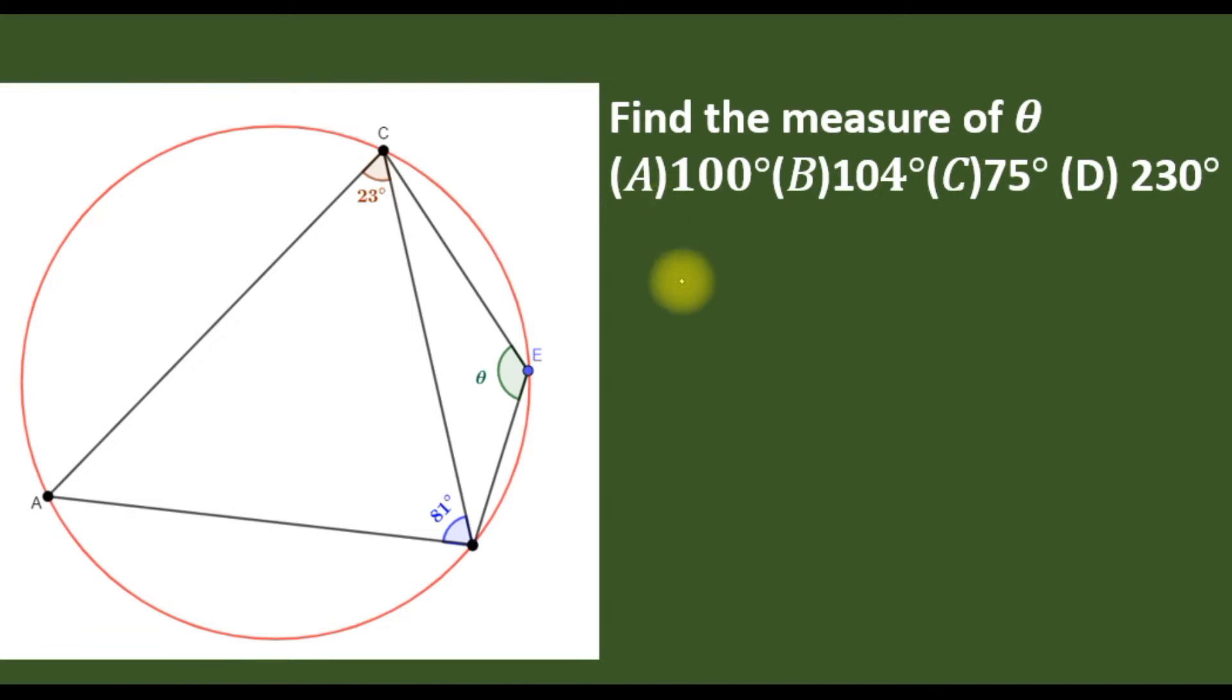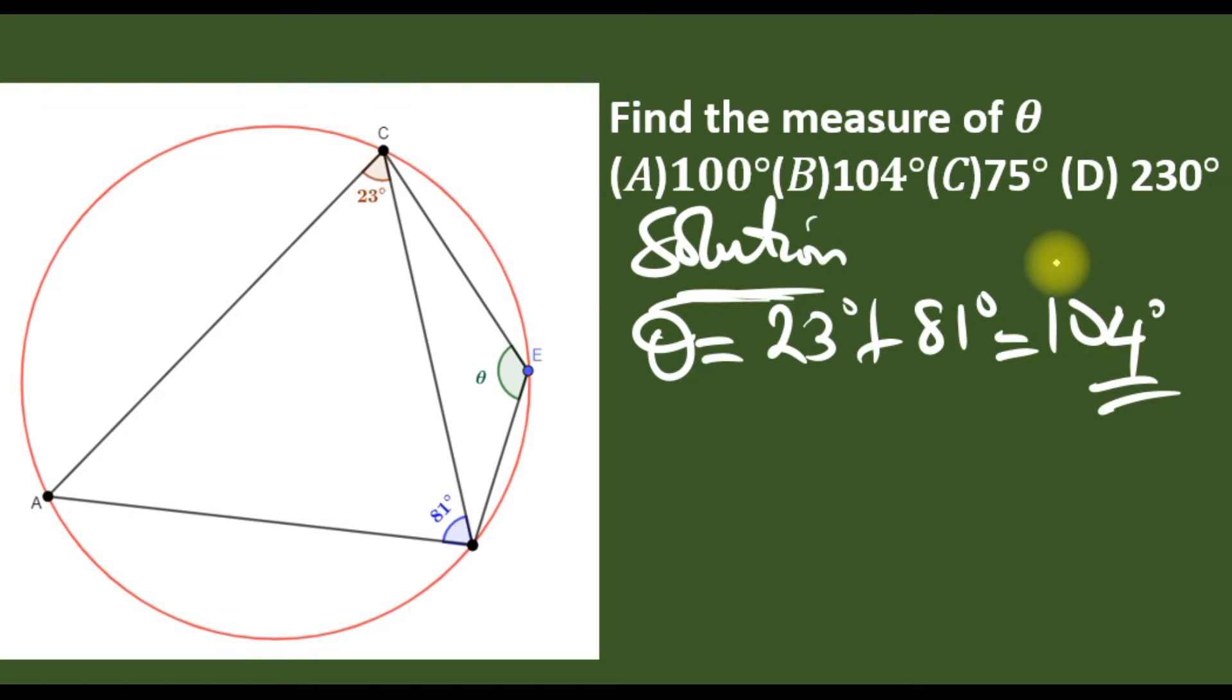We're asked to find the measure of theta. Anytime you are given a cyclic quadrilateral where a triangle is formed such that these angles are given, if you add this and this, the answer is theta. So theta equals 23 degrees plus 81 degrees, so our answer is 104 degrees, option B.